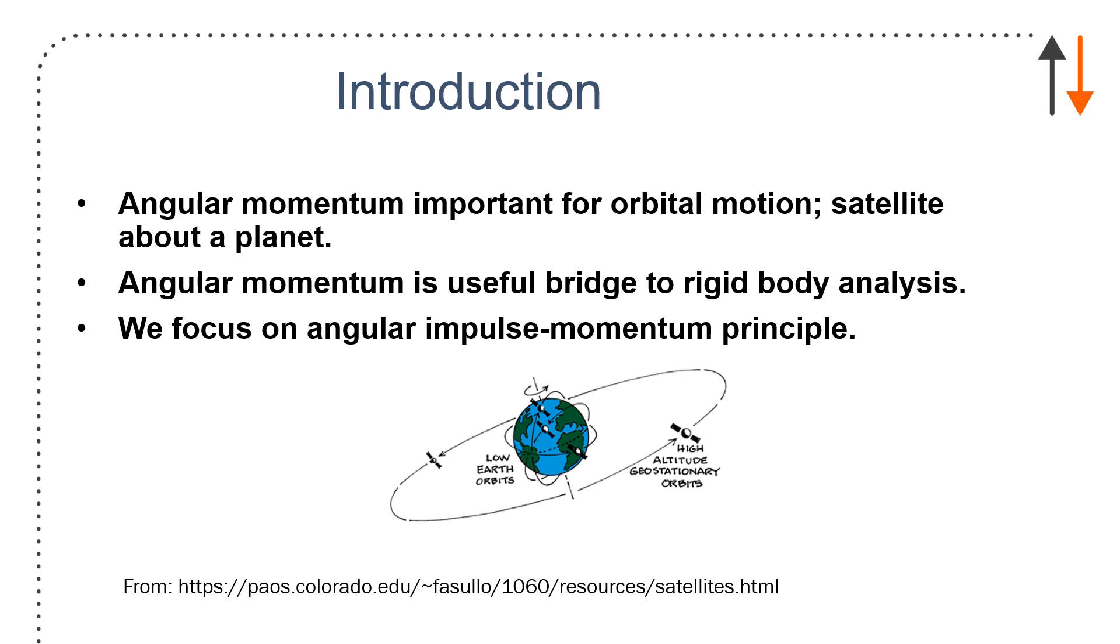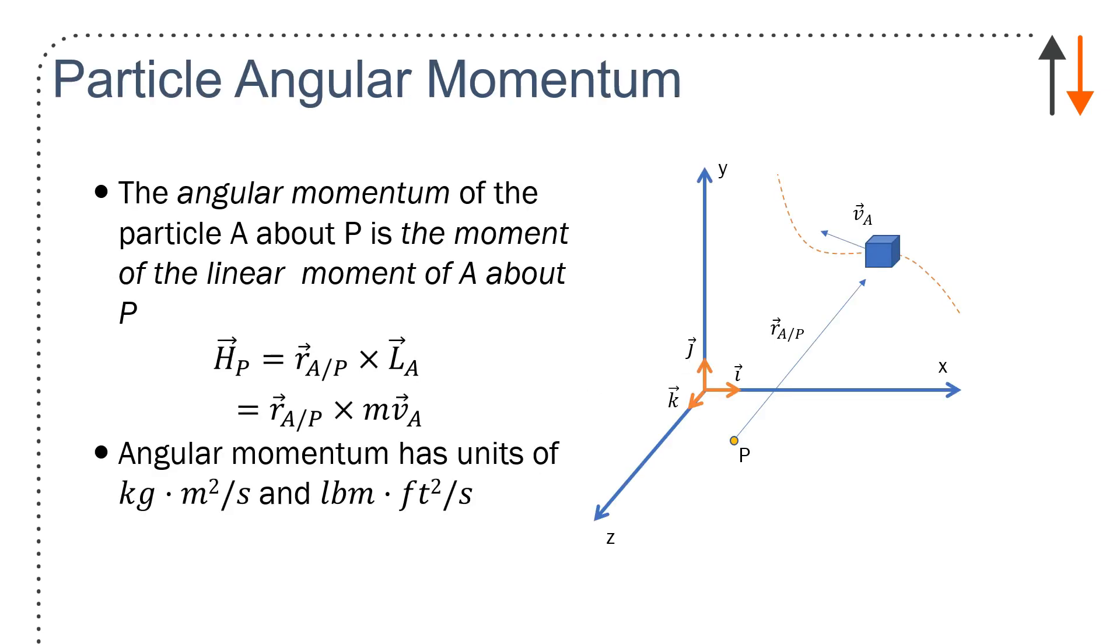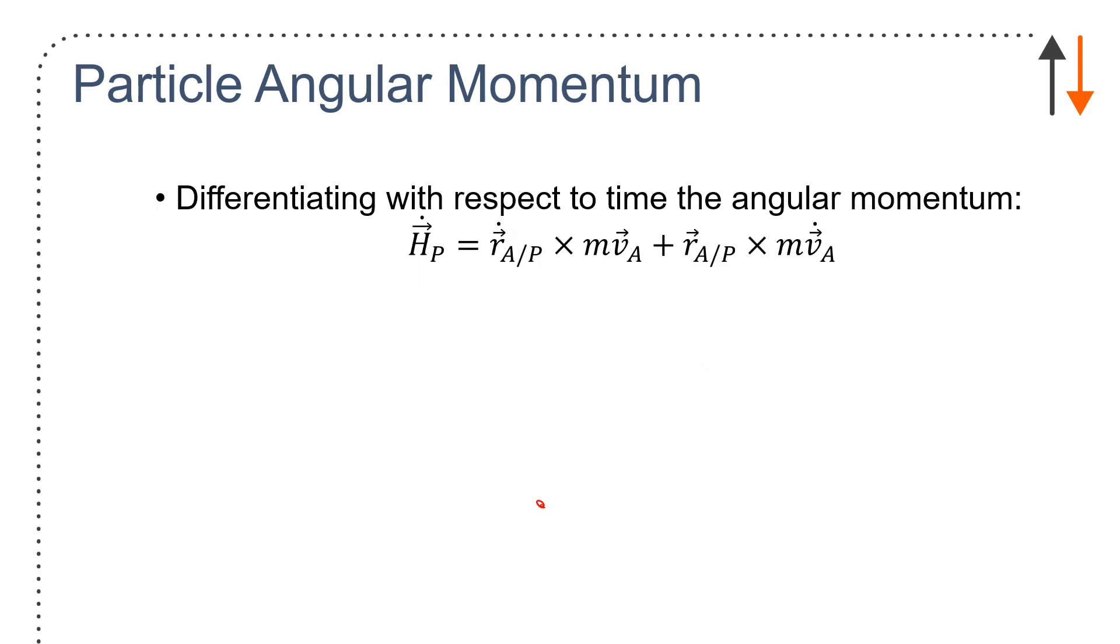Moving forward from this, angular momentum will have units of kilogram meter squared per second or pound mass feet squared per second, slugs feet squared per second also. If you differentiate that, you end up with these terms right here. So h dot p with respect to time.